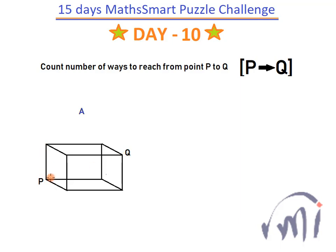We have to walk along these edges. The edges originating from point P are this one, this one, and this one. So if I start from point P I can reach to this point, this point, and this point. There is exactly one way in which each of these points can be reached if we start from point P.